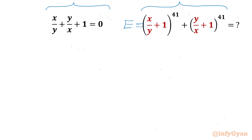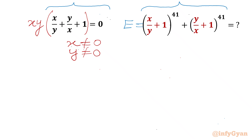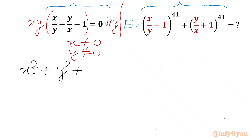We can see x and y are in the denominator, so x cannot be 0 and y also cannot be 0. Now I can multiply our given equation by xy on both sides. Simplifying the left-hand side: xy times x/y gives x², xy times y/x gives y², and xy times 1 gives xy. The right-hand side will be 0, giving us x² + y² + xy = 0.